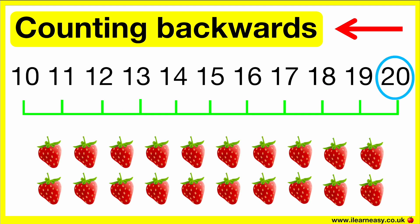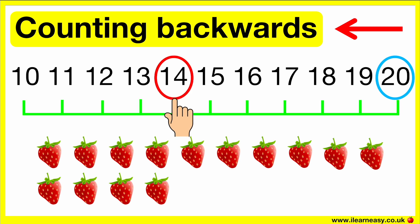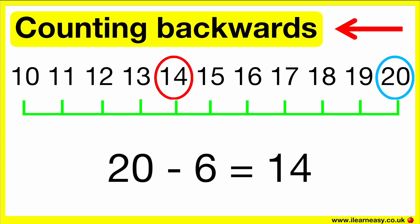Tina has 20 strawberries. She eats six. How many strawberries does she have left? Start at 20 because she has 20 strawberries. Then, count back six. 19, 18, 17, 16, 15, 14. So, she has 14 strawberries left. 20 minus six equals 14.